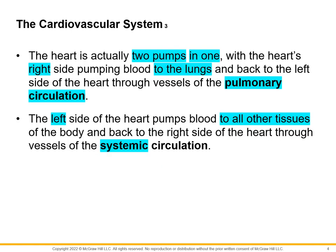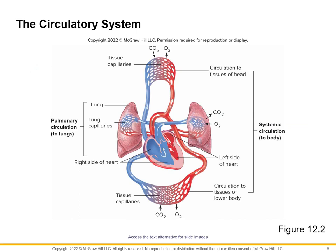The heart is actually two different pumps pieced together into one organ. The right side pumps blood to the lungs — this direction is called pulmonary circulation because it circulates blood toward the respiratory system. The left side pumps blood to all the other parts of the body, referred to as systemic circulation because the blood goes to all the other organ systems.